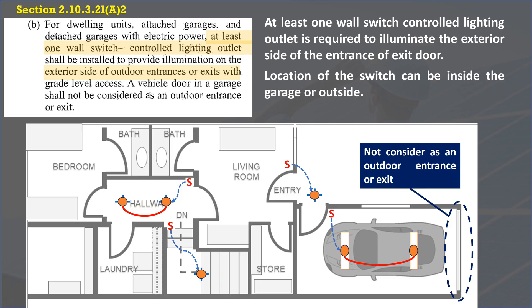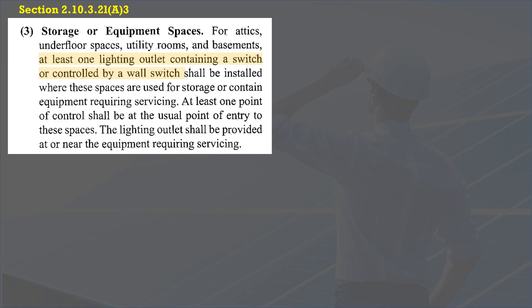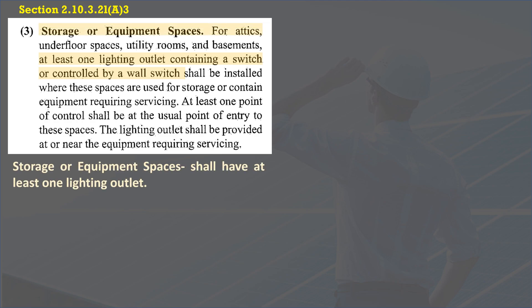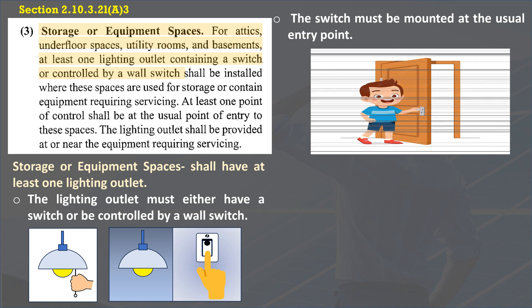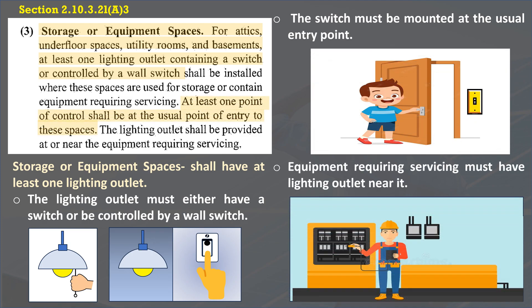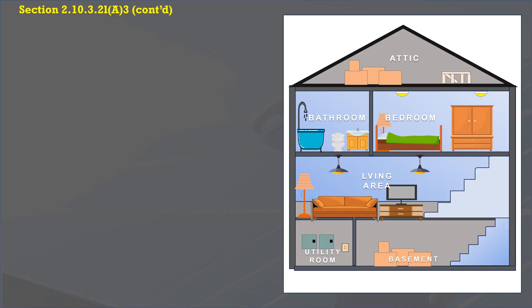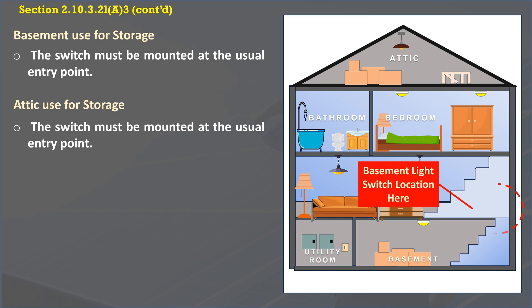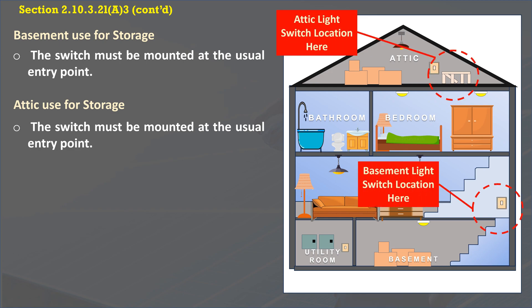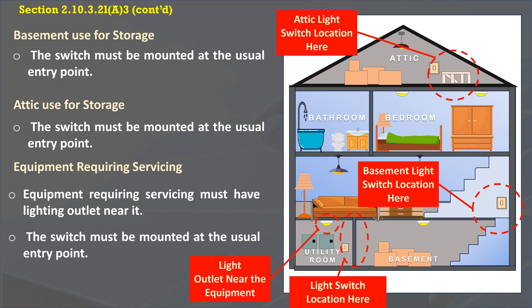At least one lighting outlet is required in areas of dwelling units used for storage or equipment space requiring servicing. These include attics, underfloor spaces, utility rooms, and basements. The lighting outlet must either have a switch or be controlled by a wall switch. The switch must be mounted at the usual entry point, while equipment requiring servicing must have a lighting outlet near it. A utility room with a piece of equipment requiring servicing must have a lighting outlet installed near that equipment.